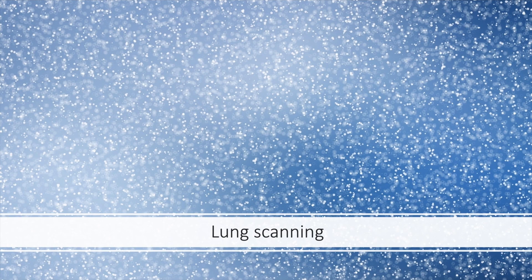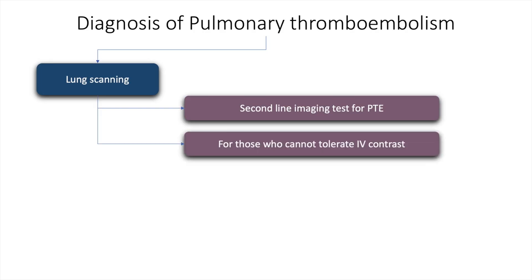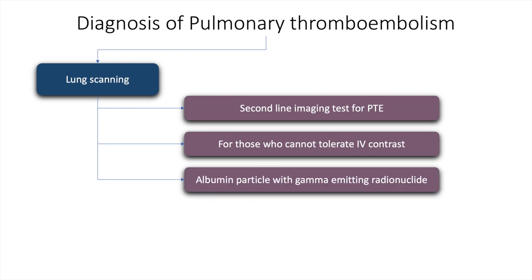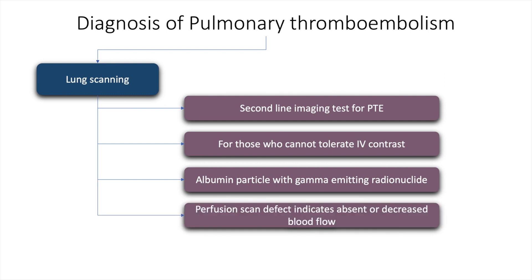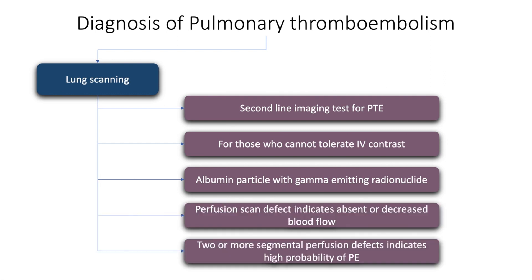Lung scanning is the second-line test for PTE and is used for those who cannot tolerate IV contrast. Albumin particles with gamma-emitting radionuclides are used to demonstrate perfusion defects, which indicate absent or decreased blood flow. Two or more segmental perfusion defects indicates a high likelihood of pulmonary embolism.